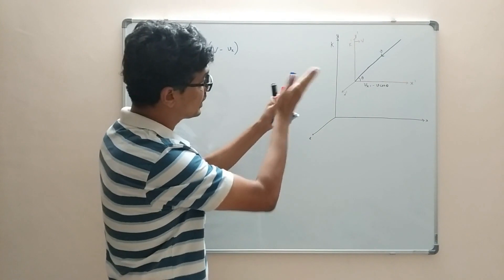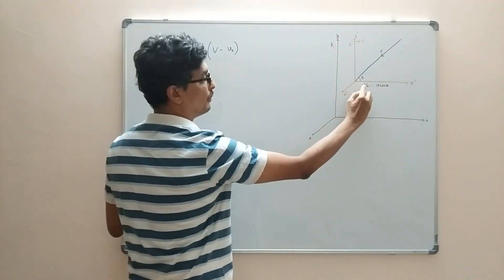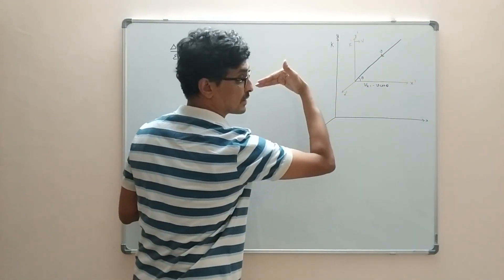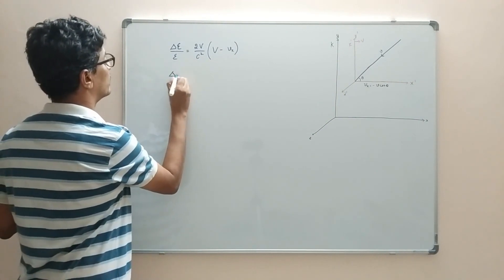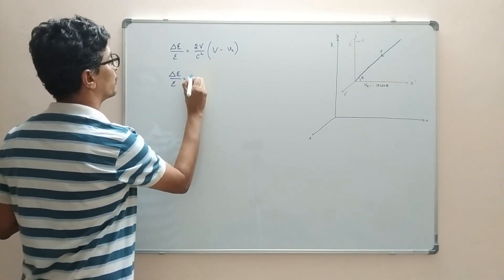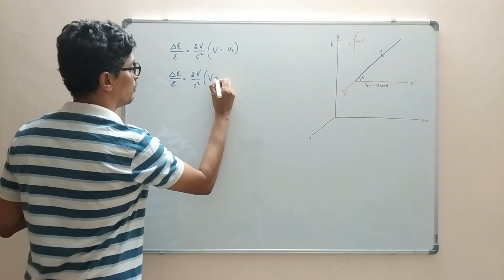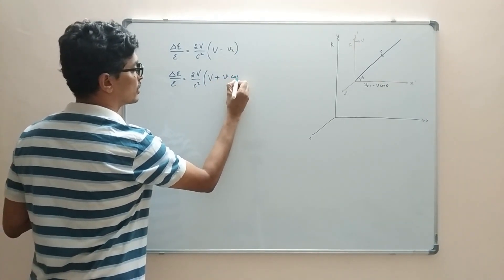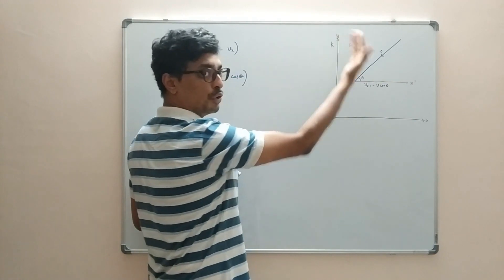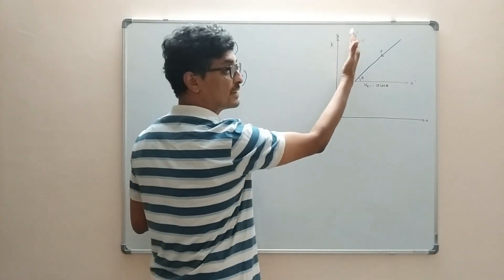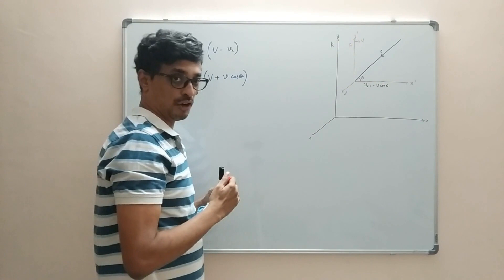With this picture, if the particle velocity makes an angle with the negative x-axis, then v_x equals −v·cosθ. Substituting this, Δε/ε becomes 2v/c² times (v + v·cosθ). When θ is between 0 and π/2, this is a head-on collision; when θ is greater than π/2, it is a follow-on collision.